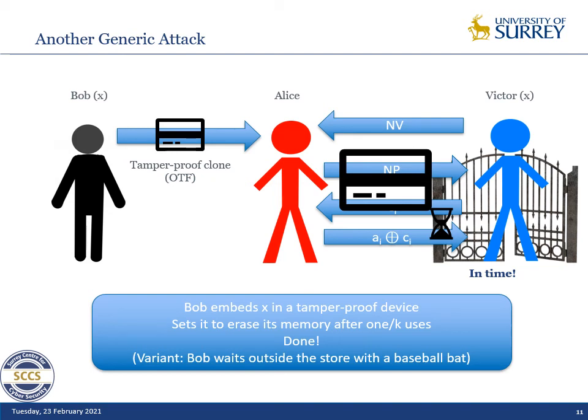This attack basically works on all protocols. There is not much that we can do about it, except making sure that Bob does not know his secret key in the first place so that he cannot create such a device. That's something we should really keep in mind when doing research on terrorist fraud resistance.